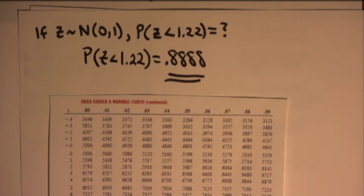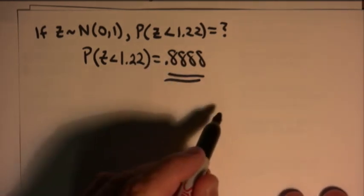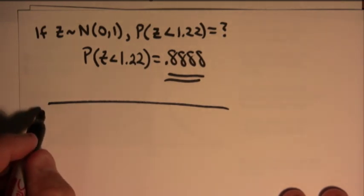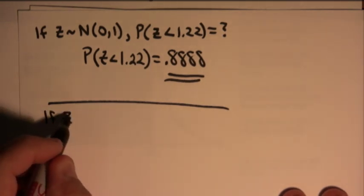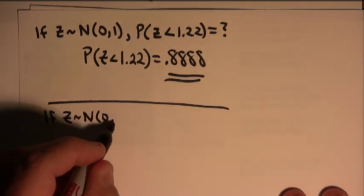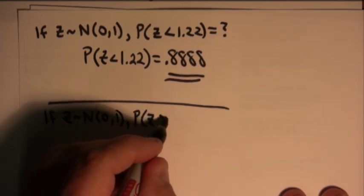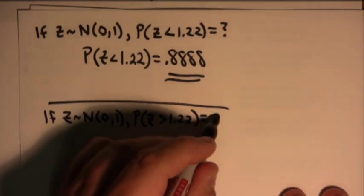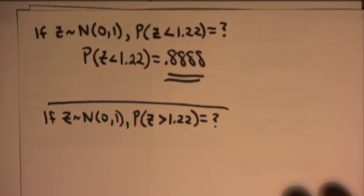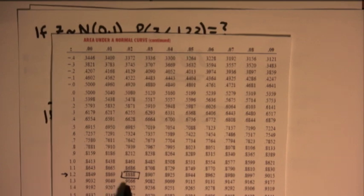Now, of course, if the probability you're looking for is not a less than, you have to work slightly harder because the table doesn't give greater than. So if I ask you what's the probability with a standard normal that z is greater than 1.22, you would start off pretty much the same way. You would look up 1.22, and since I've already done that, I'll just refer to it again. It's 0.8888. But that's not the answer.